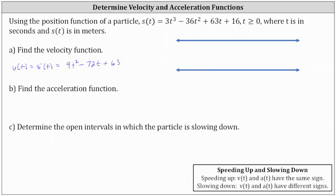Next, we're asked to find the acceleration function. The acceleration function a of t is equal to the derivative of the velocity function, which is also equal to the second derivative of the position function. Differentiating the velocity function: the derivative of nine t squared is 18 t, minus the derivative of 72 t which is 72, plus the derivative of 63 which is zero. The acceleration function is equal to 18 t minus 72.